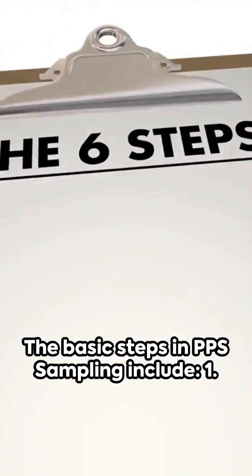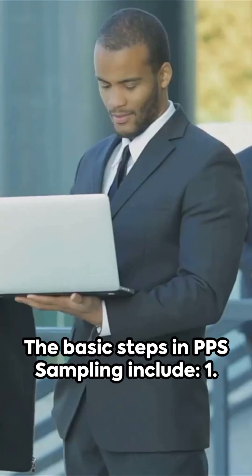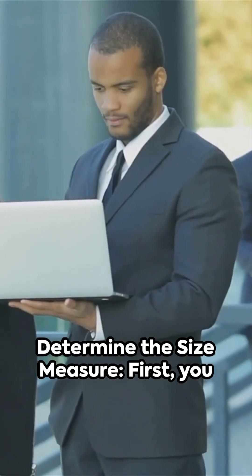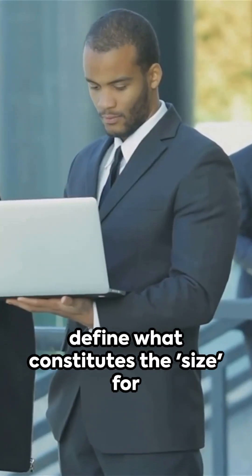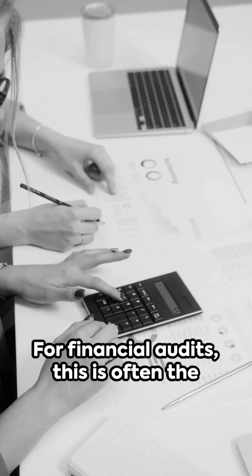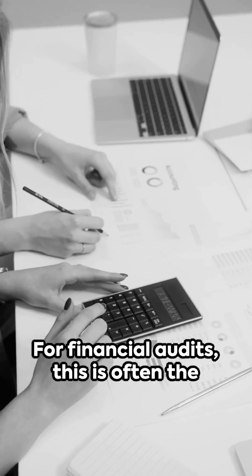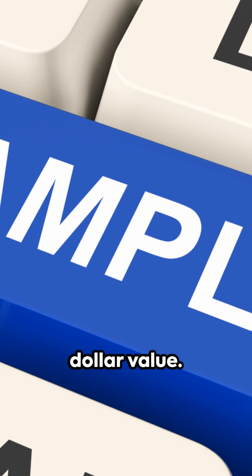The basic steps in PPS sampling include: 1. Determine the size measure. First, you define what constitutes the size for your sampling. For financial audits, this is often the dollar value.